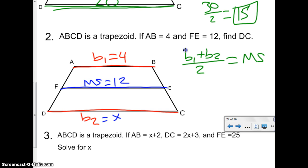That's B1 plus B2 over 2 equals MS. B1, we label this 4. B2, we don't know. So, we're going to call it X all over 2. And our Mid-Segment, they gave us, which is 12. And hey, this should look very familiar. We've got a nasty fraction. How do we get rid of it?